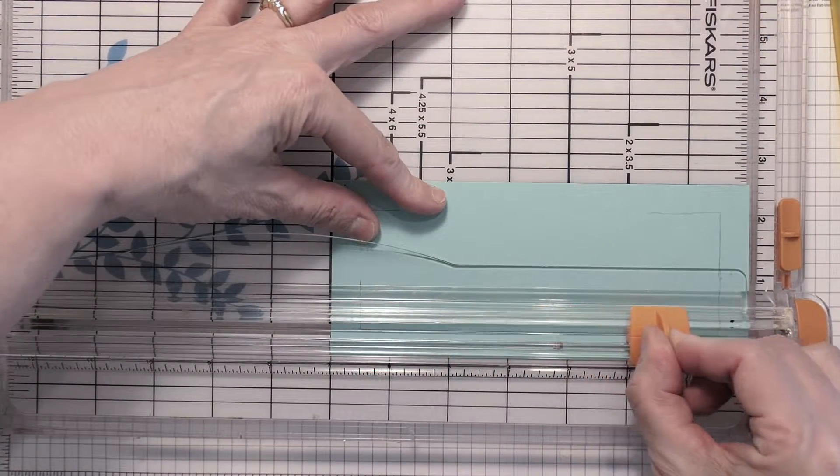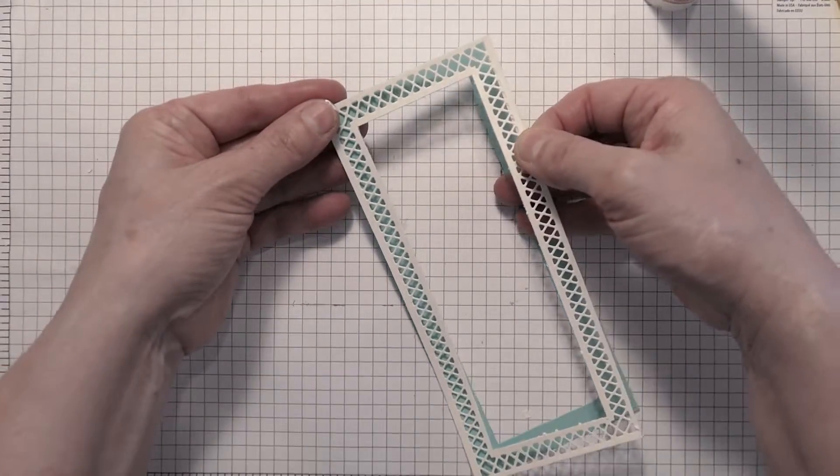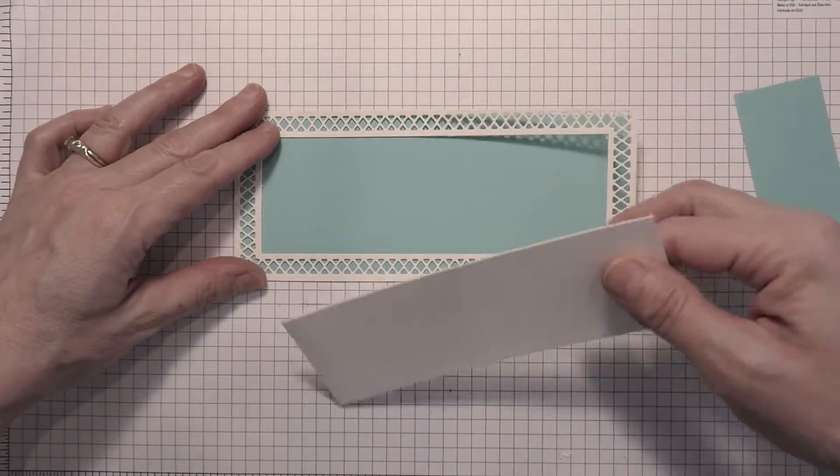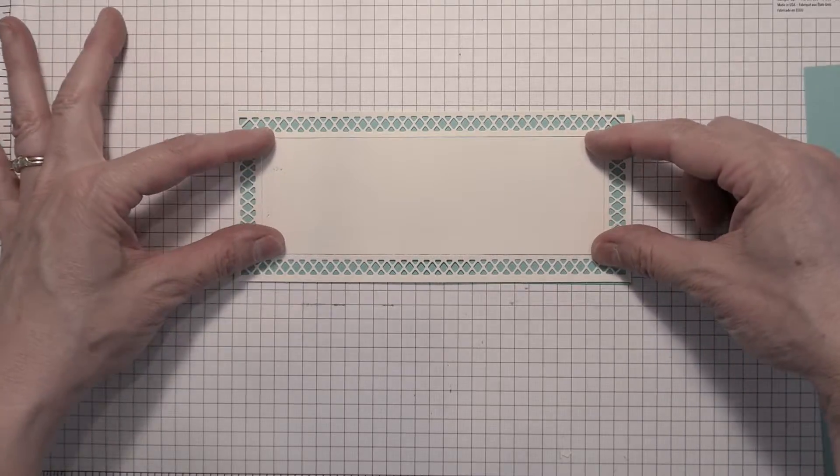I didn't want it to be too raised up if that makes sense, so I just went ahead and traced out that frame, cut it down, and then my inlay will fit inside of it. But pretend that I didn't cut that piece out and I just used that teal piece as my backing.